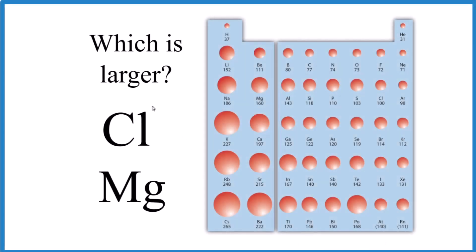Which of these two atoms is larger, has a larger atomic radius, Cl or Mg? We're talking about chlorine and magnesium.